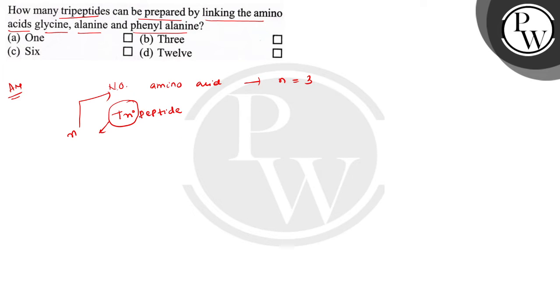If you are using different amino acids and you have to prepare a linear peptide, that is a tripeptide, the maximum number of tripeptides due to the different arrangement or sequence of the amino acids will be n factorial.